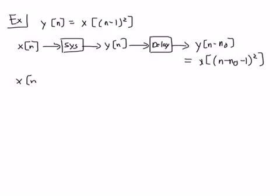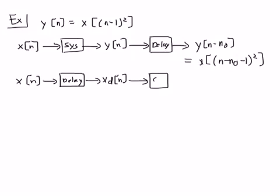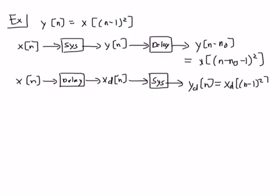The other approach is we take x(n), delay it first to get xd(n), the delayed input, and then run the delayed input through the system to get yd(n) = xd((n - 1)²).